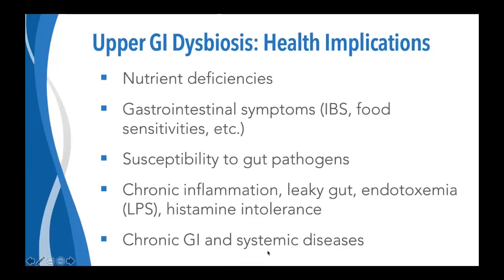Upper GI dysbiosis and its effects on small intestinal function can certainly lead to nutrient deficiencies as well as a wide range of gastrointestinal symptoms. Many typical symptoms such as gas, bloating, diarrhea or constipation, and abdominal pain that we associate with IBS and SIBO may be due to this upper GI dysbiosis. There's also intriguing new research suggesting that these imbalances, whether or not they constitute SIBO, may play a big role in gastrointestinal symptoms, including increased risk for various types of food sensitivities.